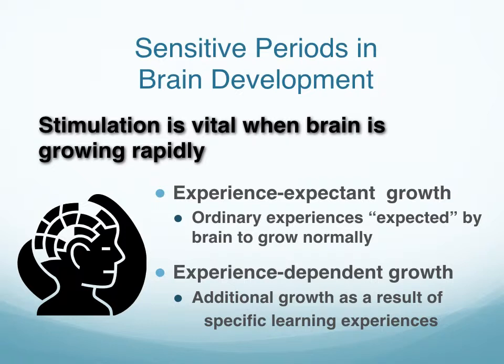The second type is experience-dependent growth — additional growth as a result of some kind of specific learning experience. This is not something that most individuals necessarily experience; it may be specific to an individual or a group. For instance, the type of education you're exposed to definitely has an impact on brain growth, but that can differ from person to person.